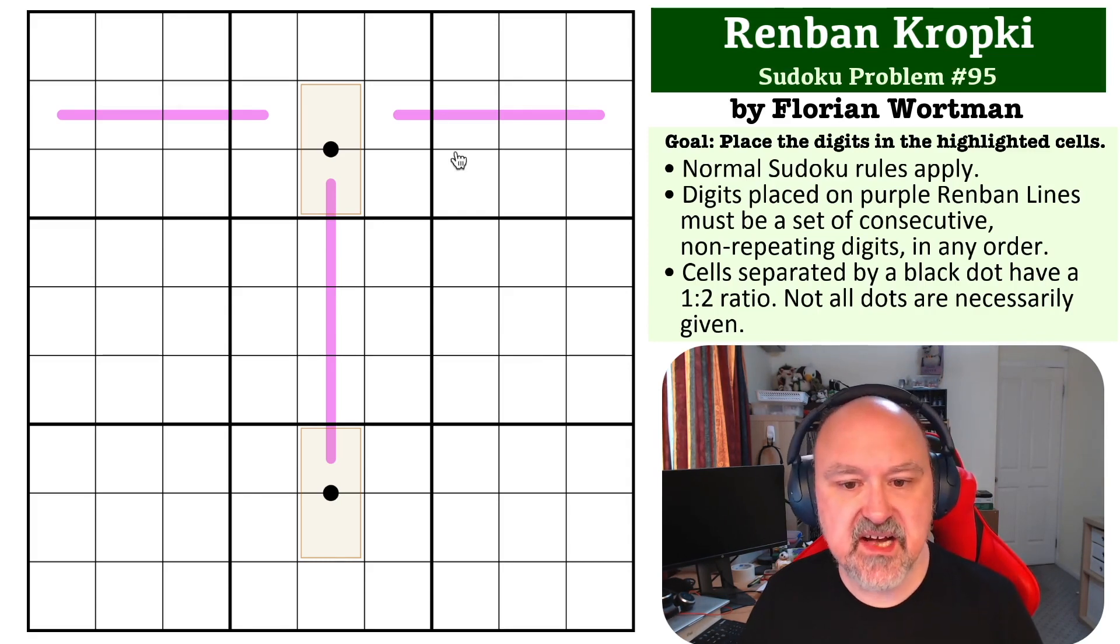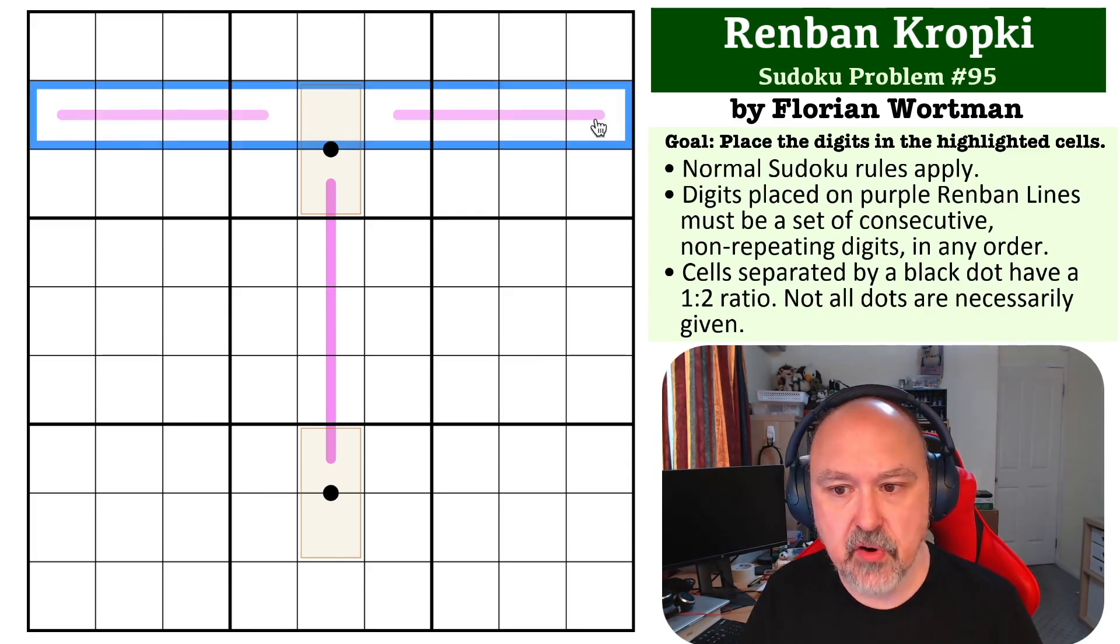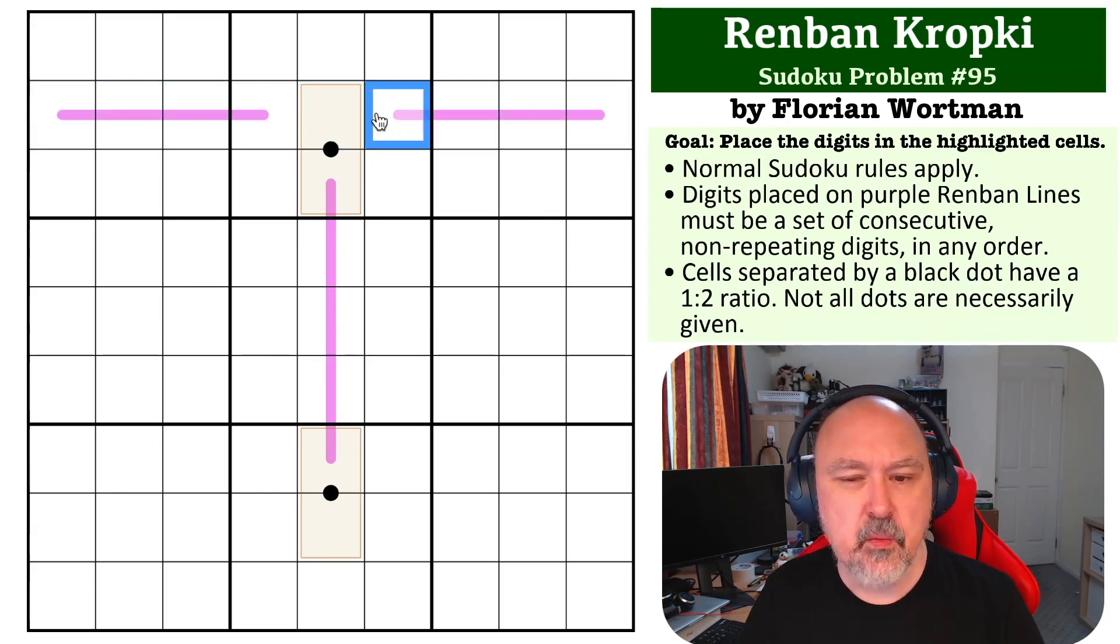The important place to start is in row two. You need to think about where certain digits can go. What can go in this cell? If you put two in this cell, where can you put one in this row? This is the only cell not on a renban line. If you put two here, you've got to put one somewhere on this line. But if you put one on a renban line, it has to go one, two, three, four. So you can never put two here. The same is true with three.